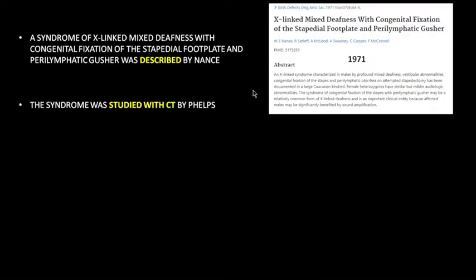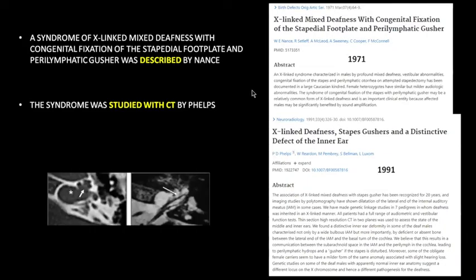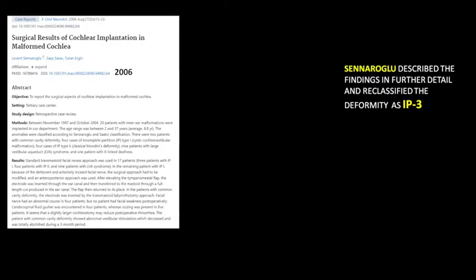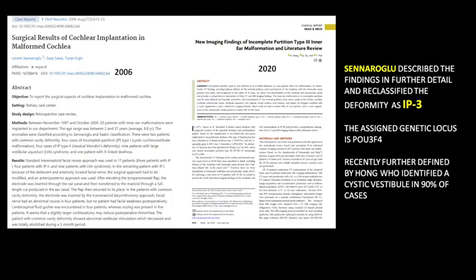A syndrome of X-linked mixed deafness with congenital fixation of the stapes footplate and perilymphatic gusher was described by Nance in 1971 and further elucidated by Phelps in 1991 utilizing CT scanning. These patients have a bulbous internal auditory canal. The interscalar septum is present; however, the modiolus and lamina cribrosa are absent, which dramatically increases intralabyrinthine pressure so that any manipulation of the stapes could conceivably result in a dangerous perilymphatic gusher. Sonaraglou reclassified this deformity as incomplete partition type 3 in 2006. A genetic locus was subsequently defined, and Hong from Shanghai identified a cystic vestibule in 90% of cases.